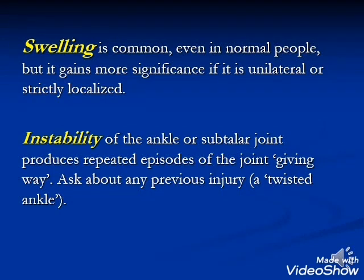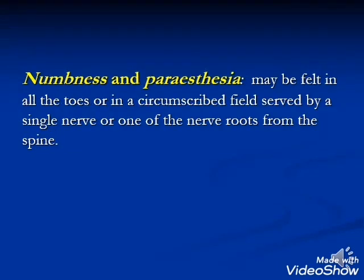Instability of the ankle or subtalar joint may produce repeated episodes of joint giving way. Ask about any previous twisting injury. Numbness and paresthesia may be felt in the toes, in a circumscribed field served by a single nerve, or in a nerve root distribution.